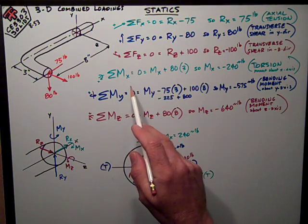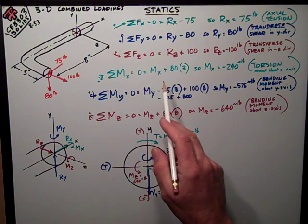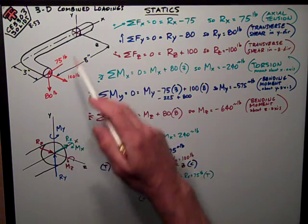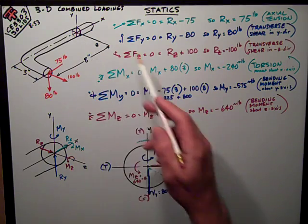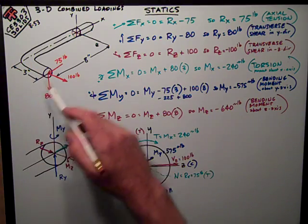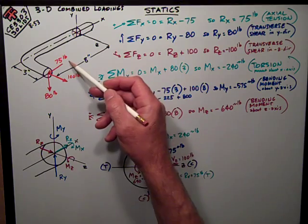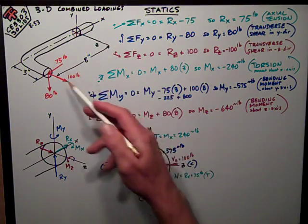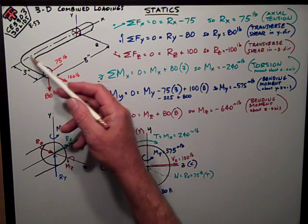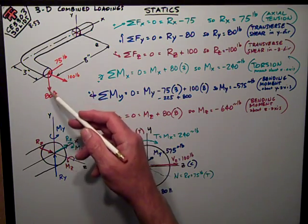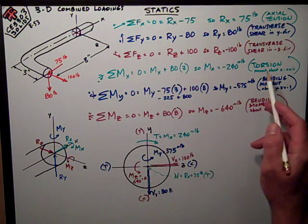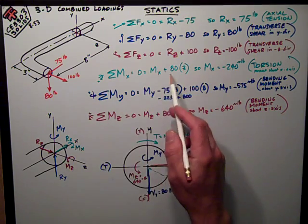Continuing on, I look at sum of moments in the X direction equals zero. The only thing that causes bending about the X axis, which is that longitudinal axis as it passes through that point there, is this 80-pound force. That's creating really a torsion, because the X force is parallel to the X axis so it creates no moment. The 100-pound force in the Z direction passes through or intersects the X axis, so it creates no moment. The only thing I've got is that 80 pounds times that 3-inch moment arm, so the moment in the X direction reaction, which is really a torsion, is 240 inch-pounds, 80 times 3.